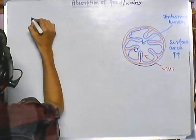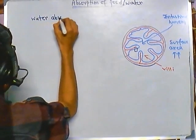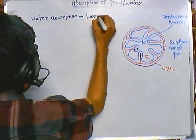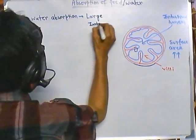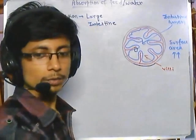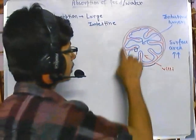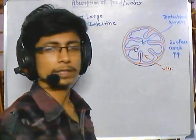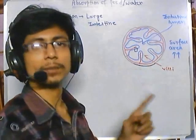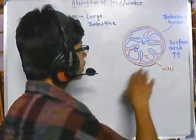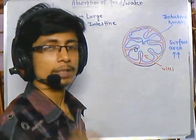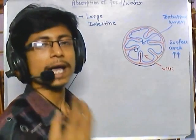Water absorption occurs in the large intestine. If you look at the intestinal wall of the large intestine, we are going to find structures coming out — these are called villi or microvilli. Microvilli are the cells present there which also have surface extensions. These surface extensions are very important for absorption. We can find this same kind of villi structure in the small intestine as well as the large intestine, but the functionality of the large intestine villi is to absorb more water and salt.